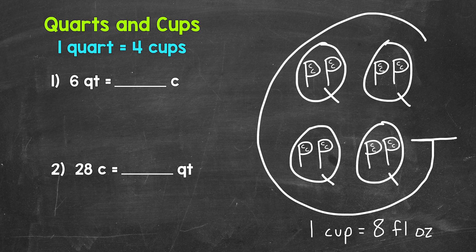To start, there are four cups in a quart. In other words, one quart equals four cups. I have a big G over here representing a gallon to help us with capacity conversions, and we can see that within each quart, we have four cups. So again, one quart equals four cups.